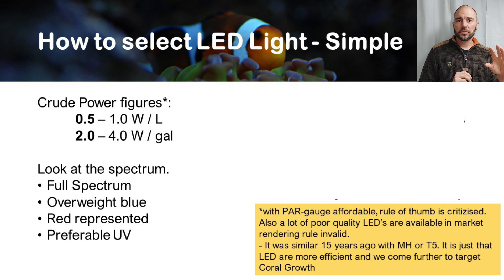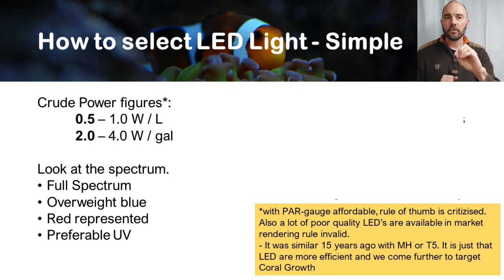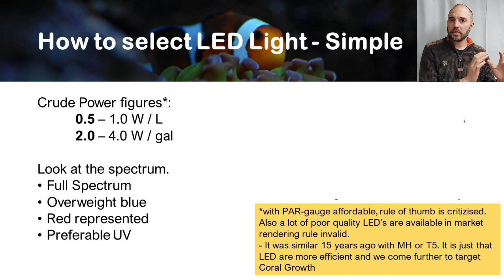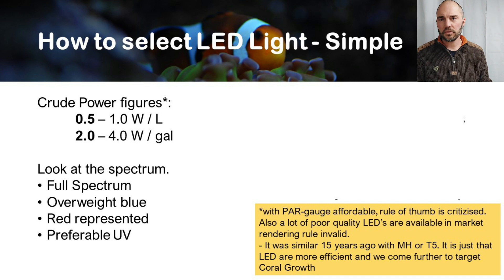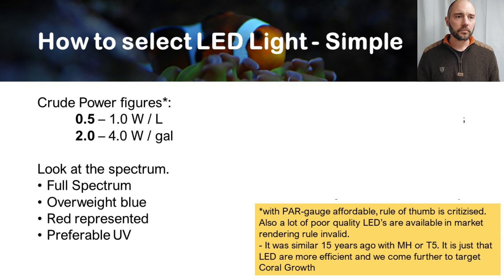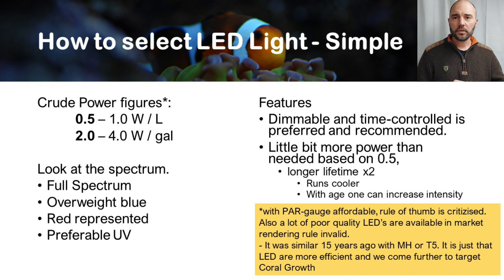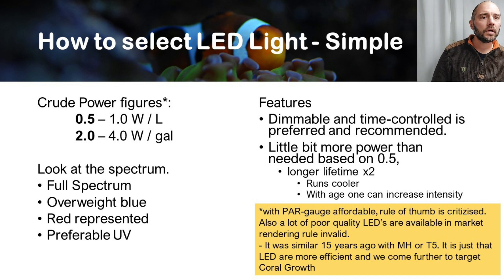Beyond power figures, we also look at the spectrum provided with the light. I'm looking for a full spectrum, but with an overweight in blue. I'm also looking for the red part to be represented, because there's a small bump in the red part for chlorophyll photosynthesis. Additionally, I prefer UV to be represented in my light. As for features: I prefer the light to be dimmable and time-controlled, so you can set when it turns on, how it dims up, and how it turns off.